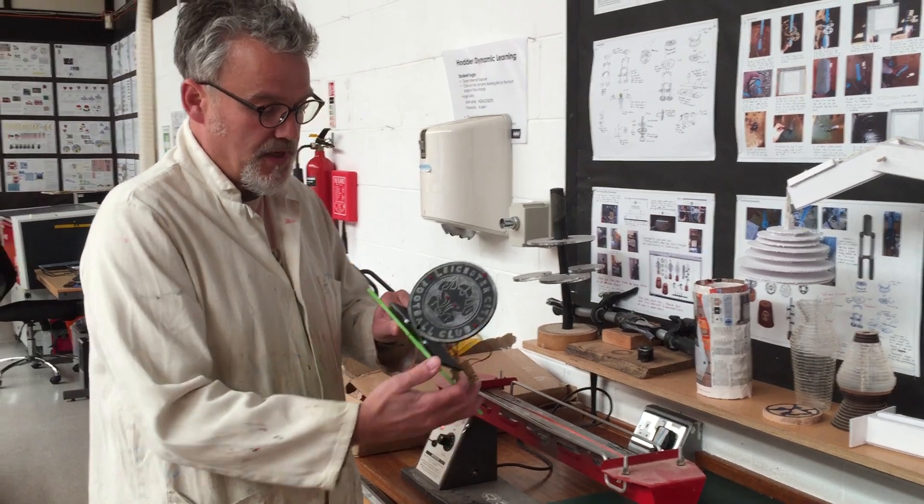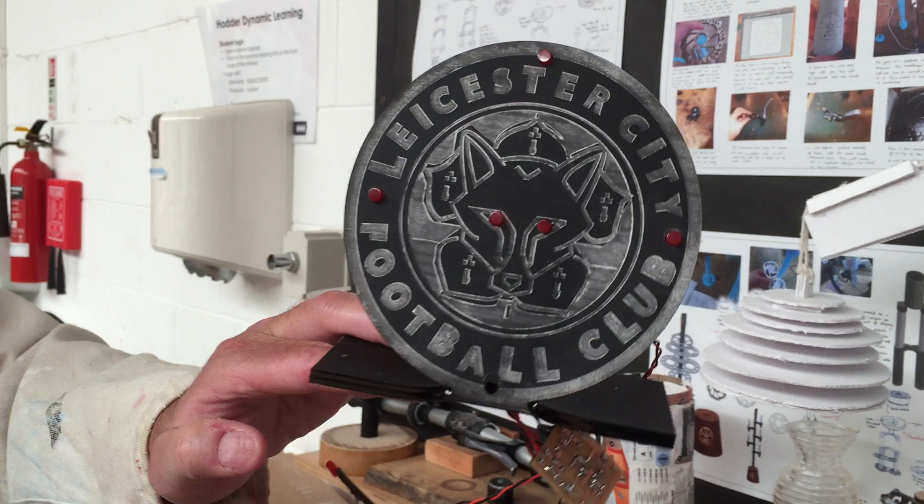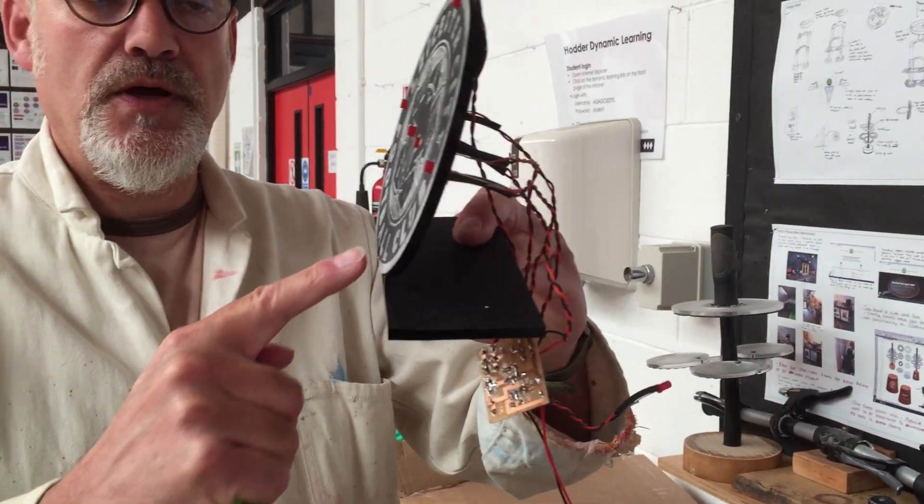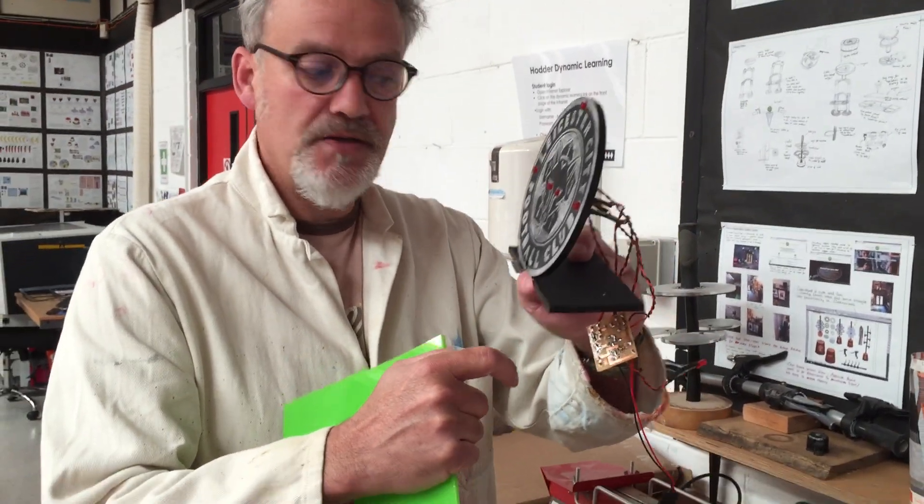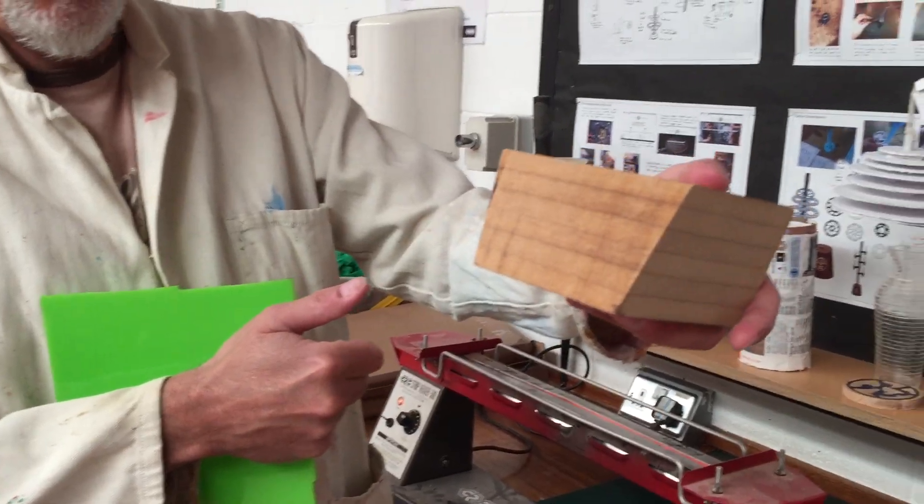So this is what the end product would look like after it's been engraved on the laser cutter. The bend we're going to put in is this one here, which is slightly less than 90 degrees—about 80 degrees bend. We're going to use a jig, which is this here, to help us achieve that angle in a moment.